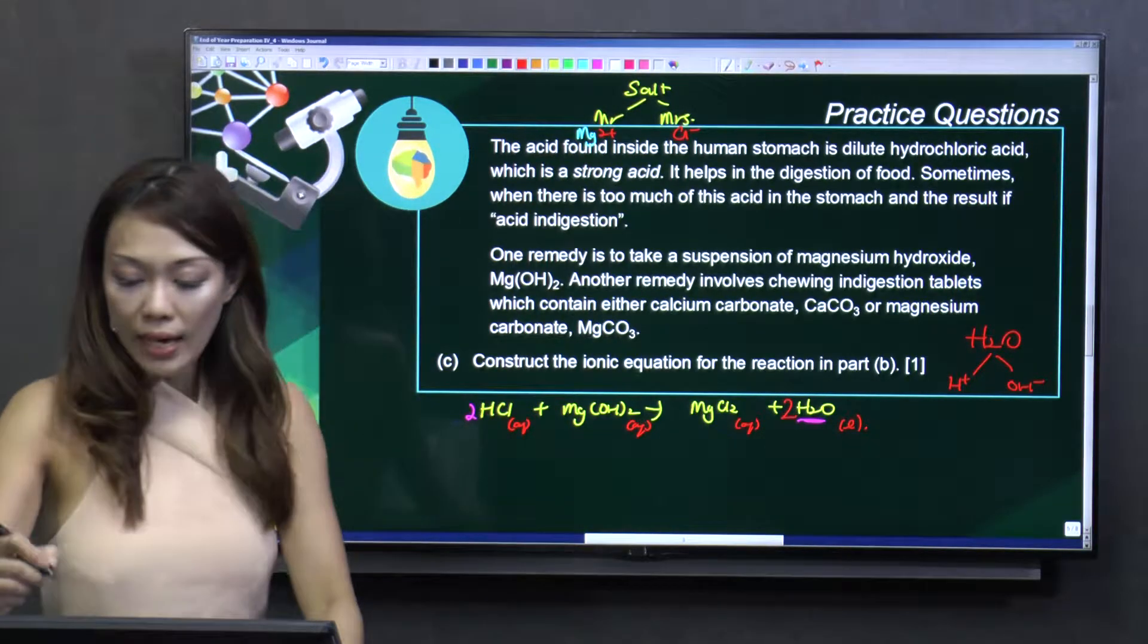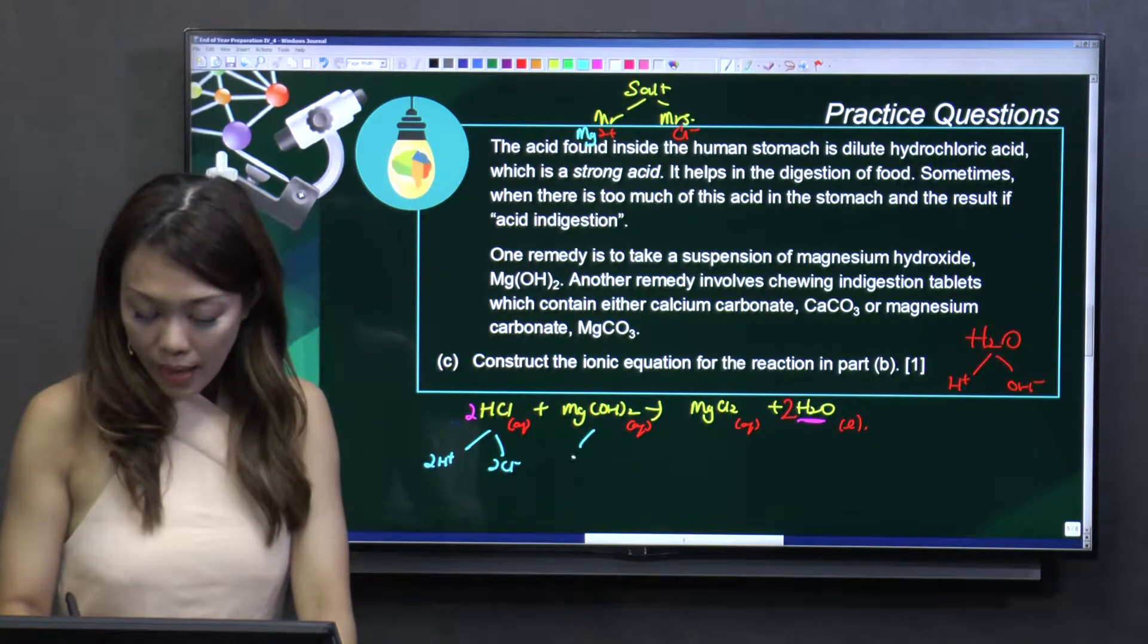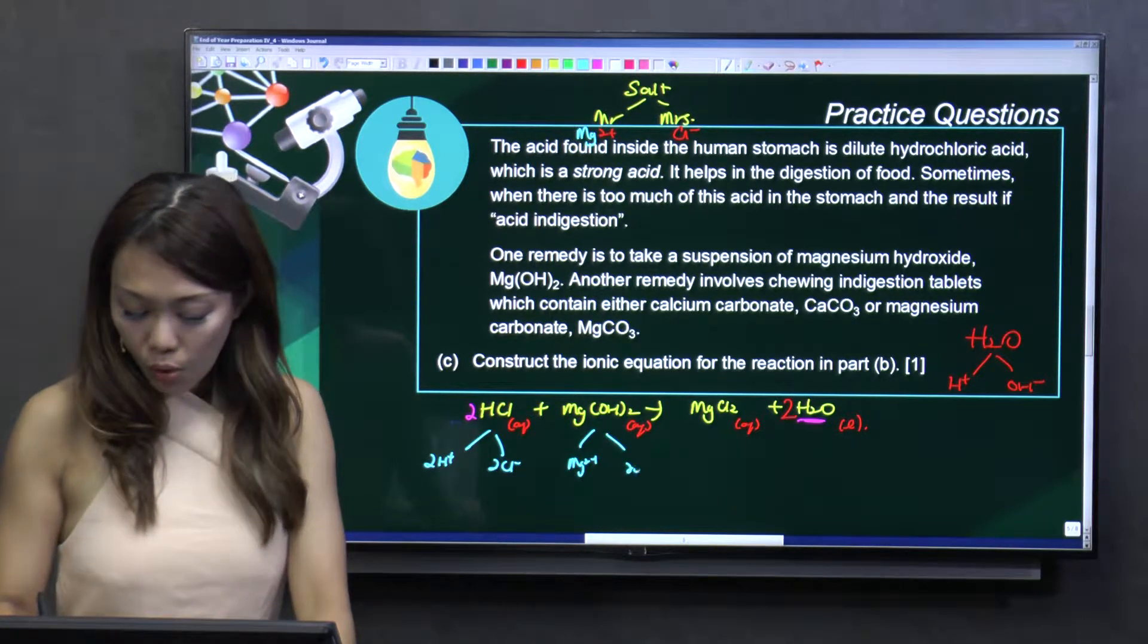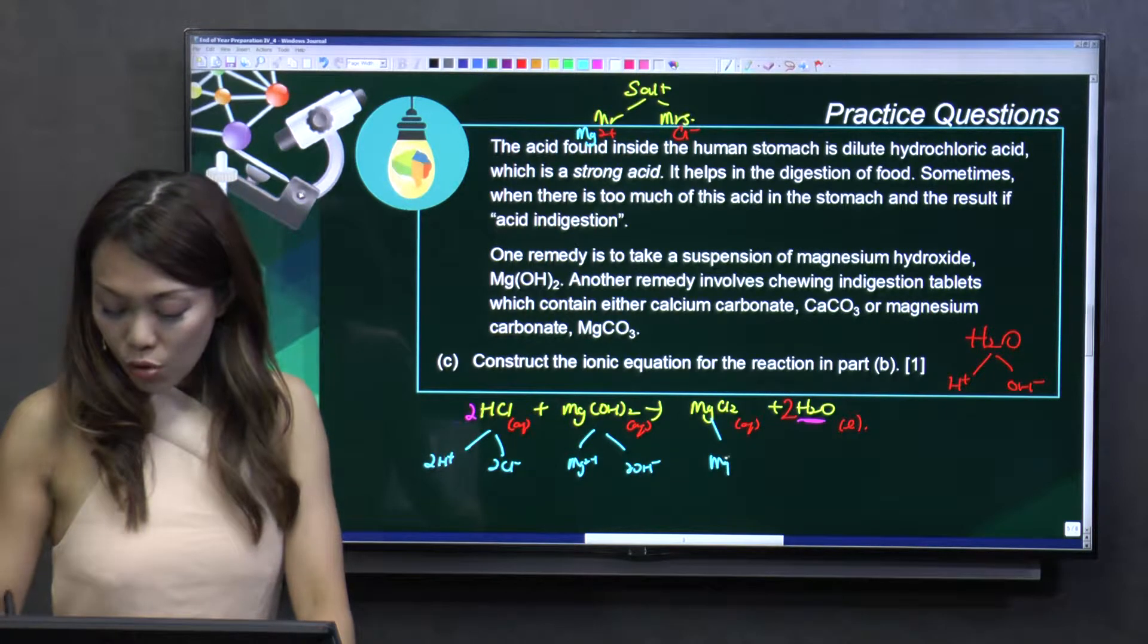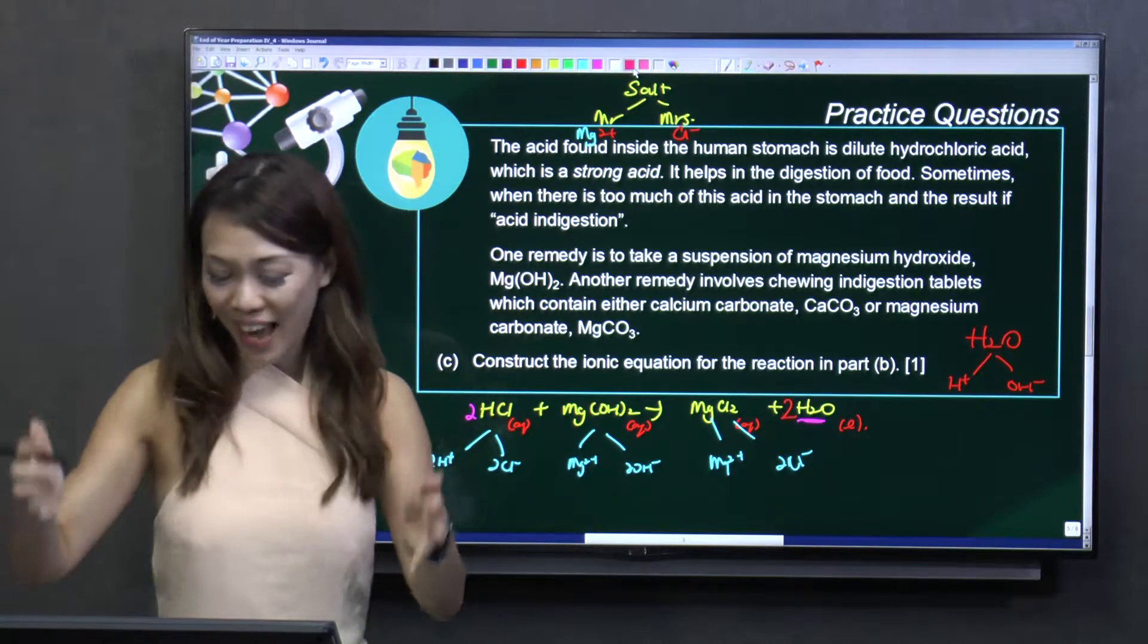So what do I do next? Let's break it up. 2Cl minus, Mg2 plus, 2OH minus, Mg2 plus, and 2Cl minus. Okay. What a save.